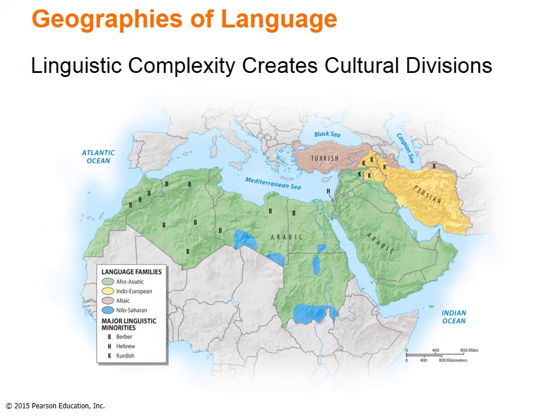The map shows the major language families of the region. Arabic is a Semitic Afro-Asiatic language that dominates the region's cultural geography. Turkish, Persian, and Kurdish, however, remain important exceptions, and such differences often have lasting political consequences. Israel's reintroduction of Hebrew further complicates the region's linguistic geography.